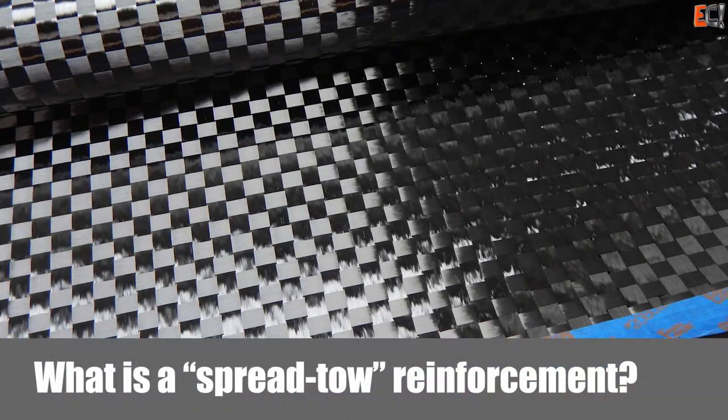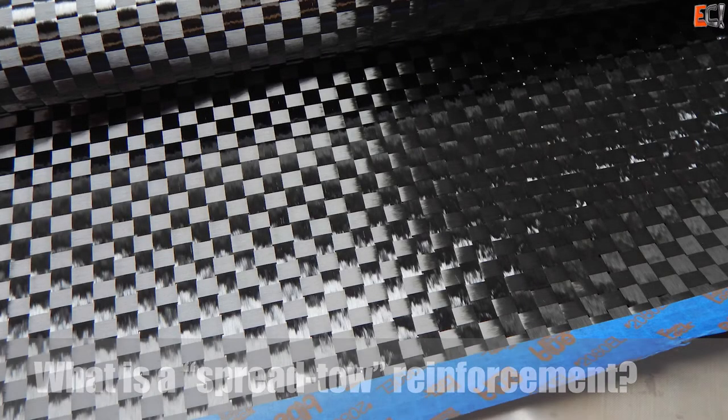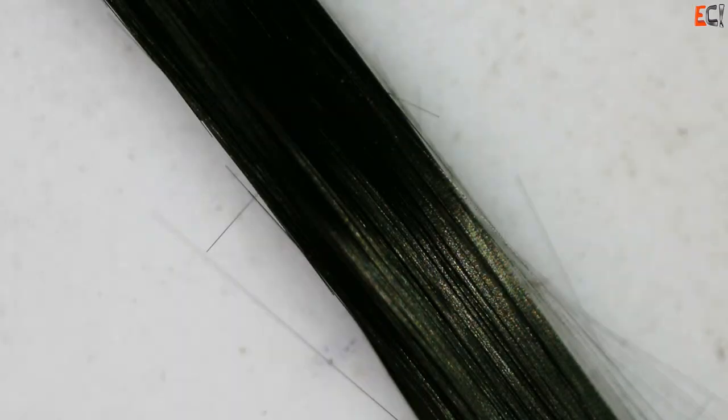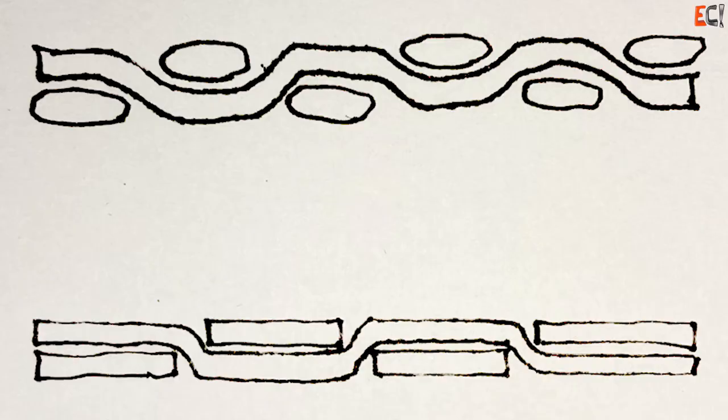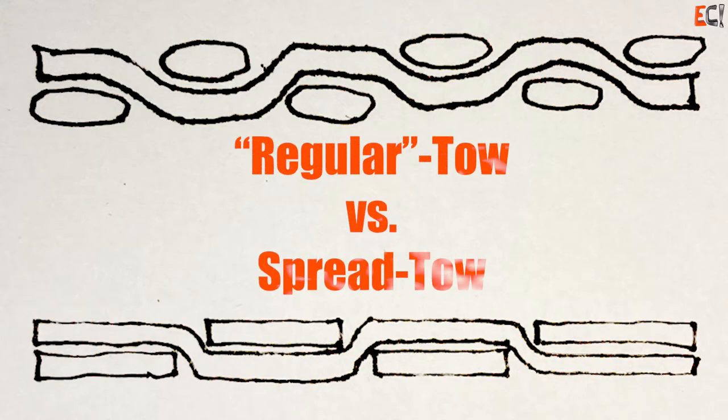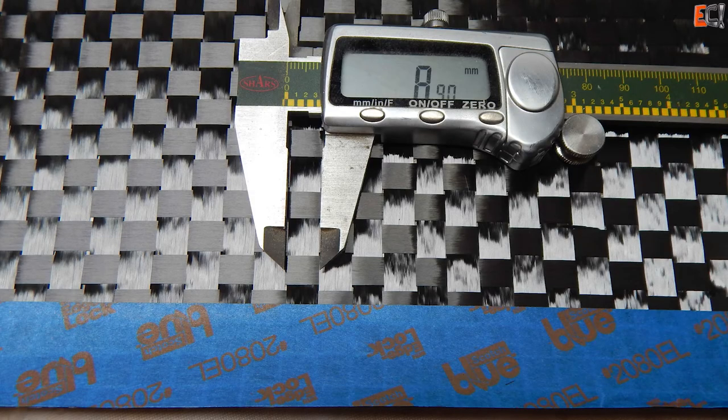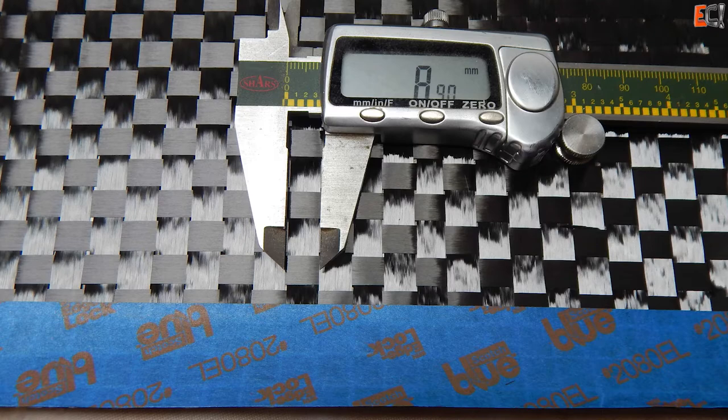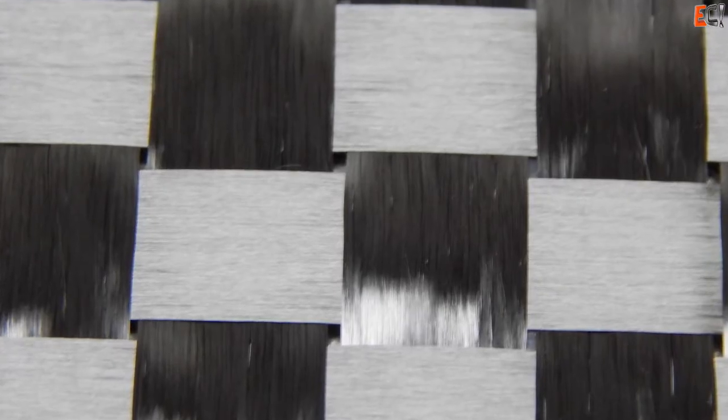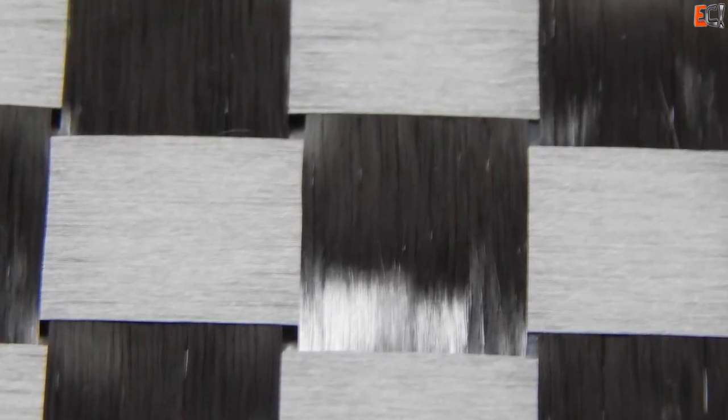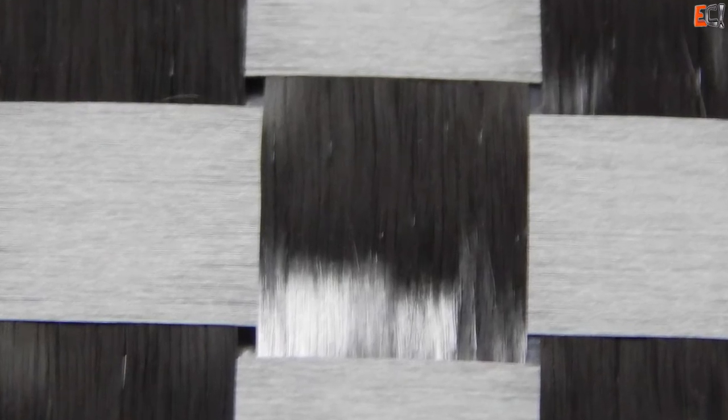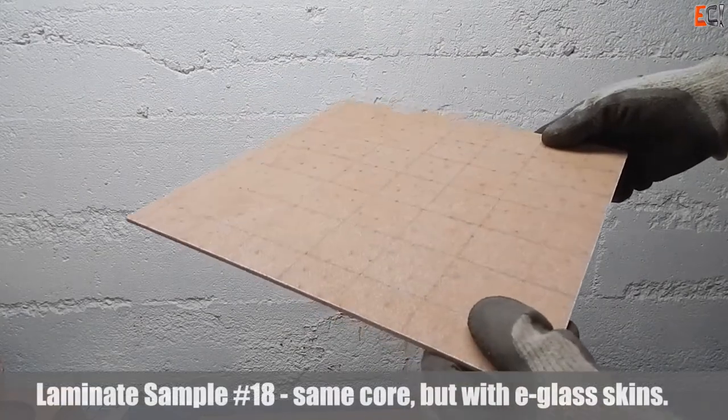Here's a look at the spread toe carbon we're going to use. This is a 12k carbon toe. Spread toe has flat toes woven together as opposed to oval, unspread toes. They spread them out so it's very thin. There's less crimp. You can see it's almost like tapes of carbon woven over each other.